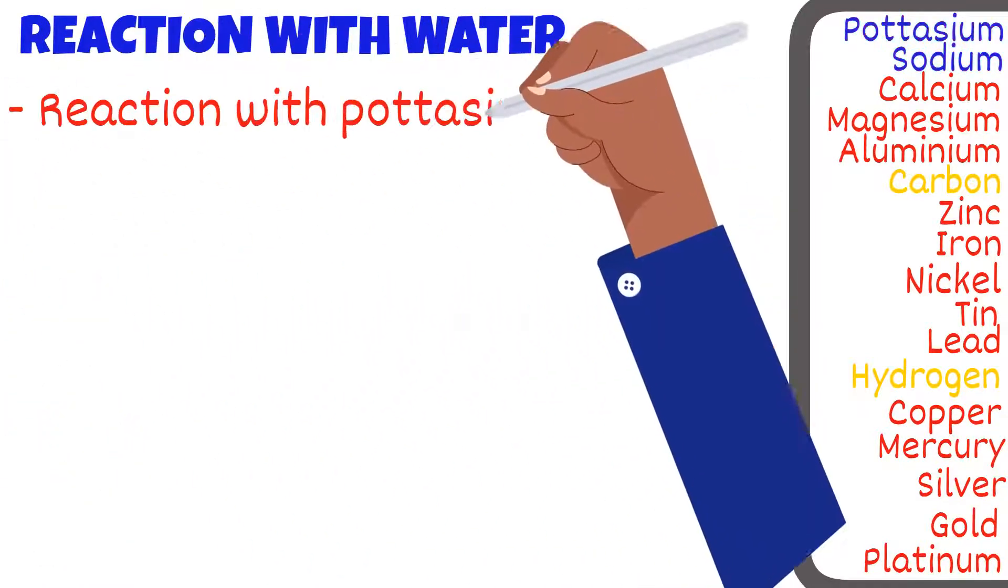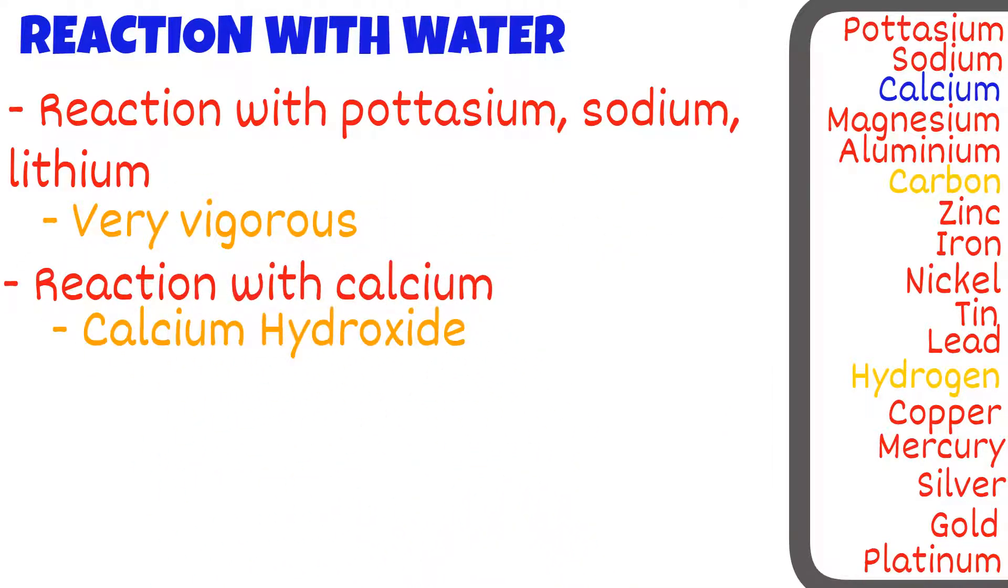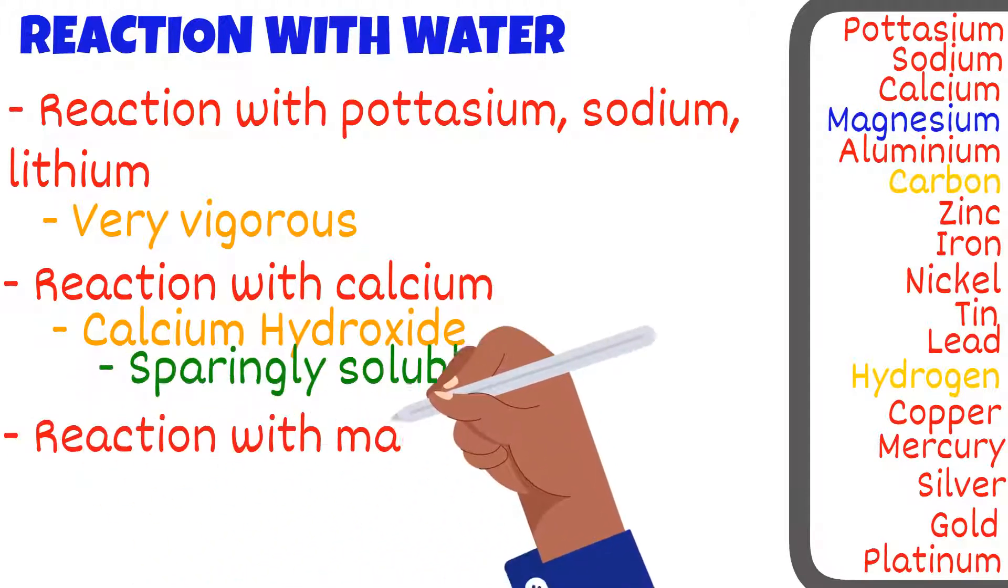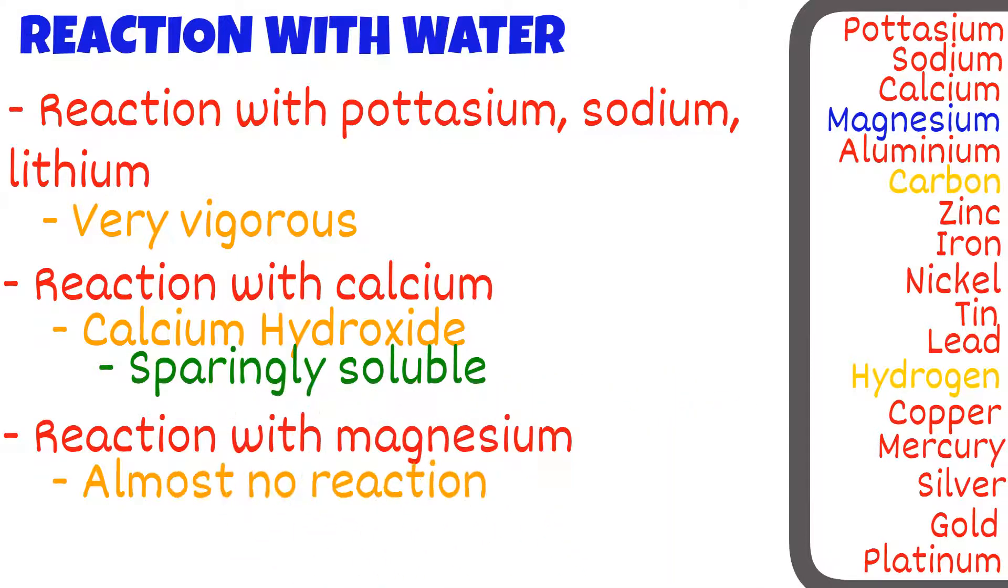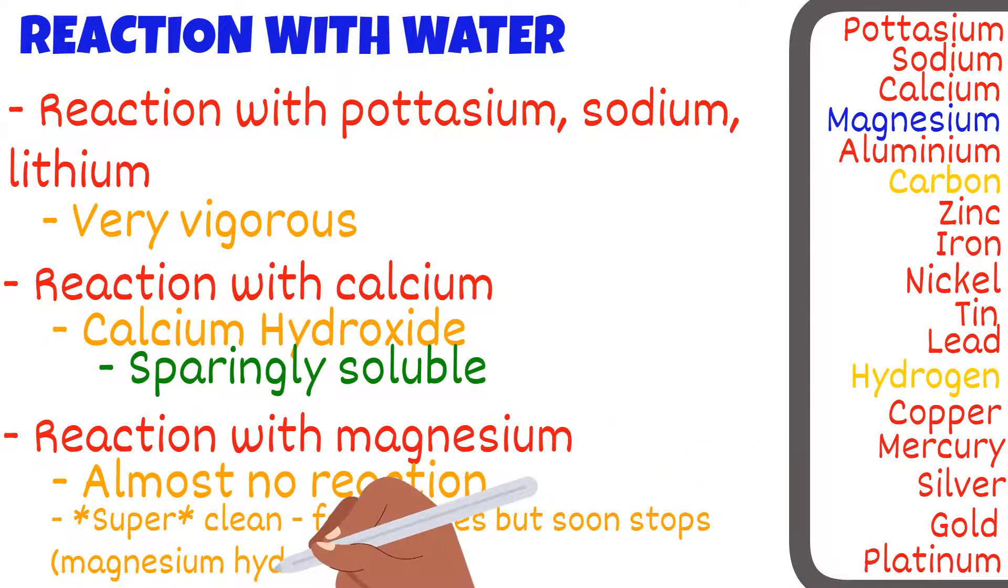The reaction with potassium, sodium, or lithium is very vigorous. Calcium's reaction with water will result in calcium hydroxide which is sparingly soluble in water - some of it might dissolve but most of it is left as a white solid. If magnesium is added to water, there's almost no reaction. But if magnesium is super clean, a few bubbles of hydrogen may form but it'll soon stop again. That is because the magnesium becomes coated by magnesium hydroxide which is insoluble, thereby preventing any more contact with magnesium.